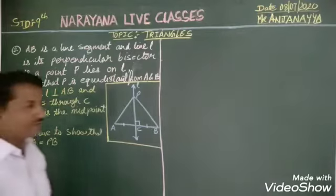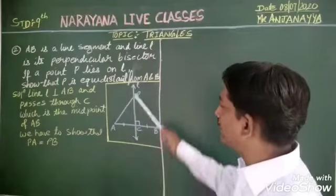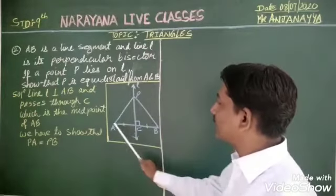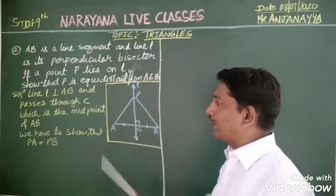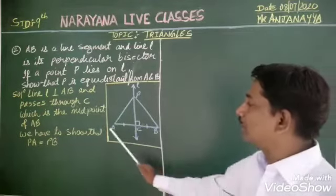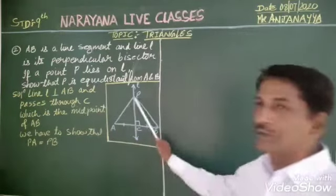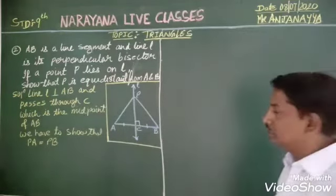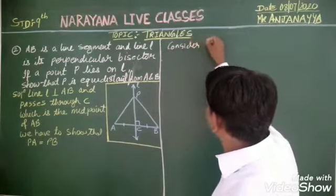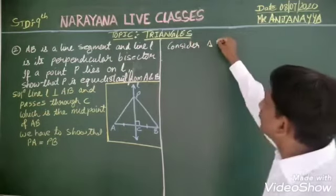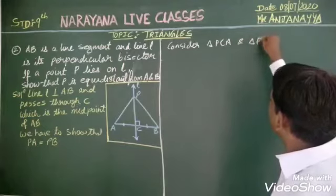So I start with the solution. First, line L is perpendicular to AB and also passes through point C, which is the midpoint of AB. We have to prove PA is equal to PB. I will consider triangle PCA and triangle PCB.